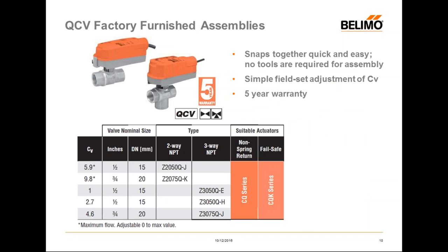The QCV product range consists of two two-way valves. The maximum CV for the half-inch is 5.9 CV and 9.8 for the three-quarter inch. For the three-way valve, there are three individual CVs: one, 2.7, and 4.6. The asterisk on the CV value indicates that these valves have the ability to adjust flows in the field. The QCV valves snap together quickly and easily — no tools required for assembling actuator to valve — with simplified field adjustment of CV, covered by a five-year warranty.